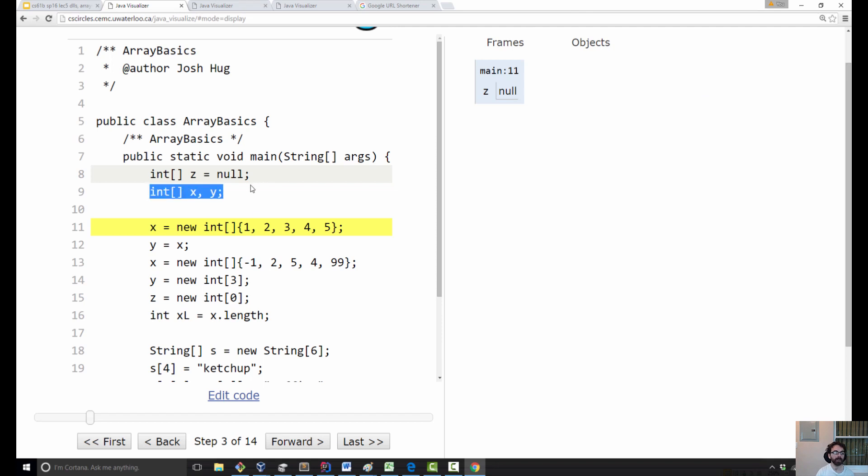Now in the visualizer, we also at this point get two more boxes, x and y, which will be 64 bits. But the visualizer, as designed by Philip Guo, does not show those boxes. But you can imagine they're there. So we do x equals new int. We get our 64-bit box x, and we fill it with 64 bits.